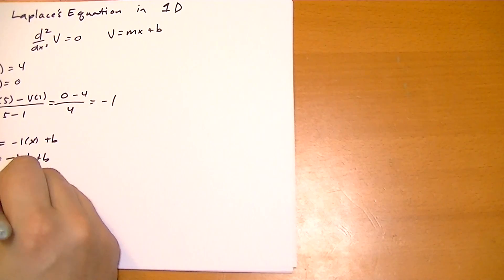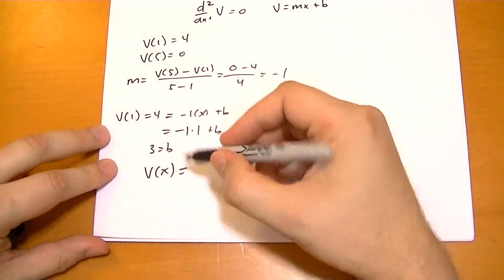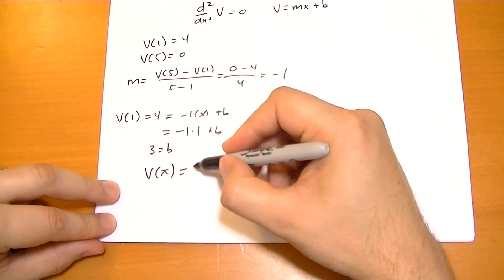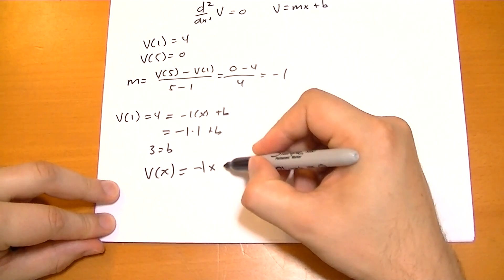So we get the equation v of x. And you're not even seeing this, are you? Sorry about that. v(x) is equal to -x + 3.